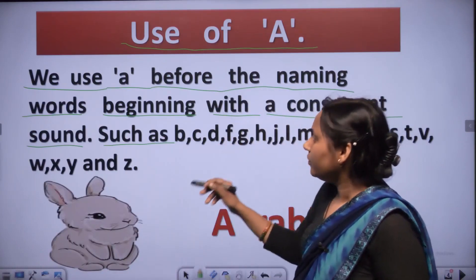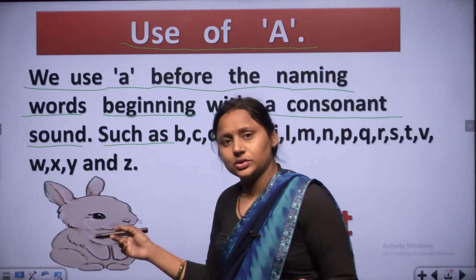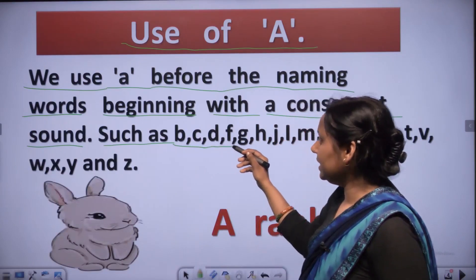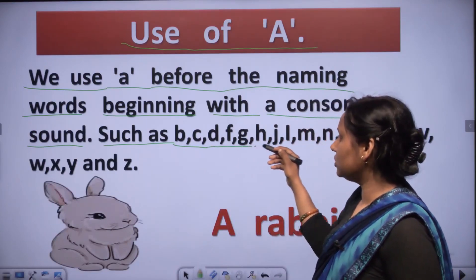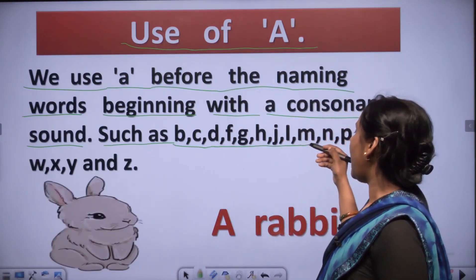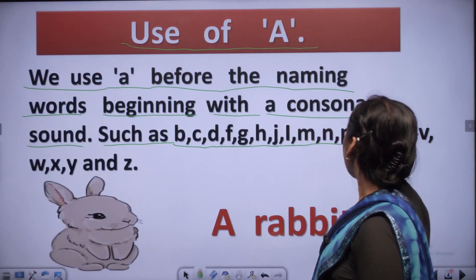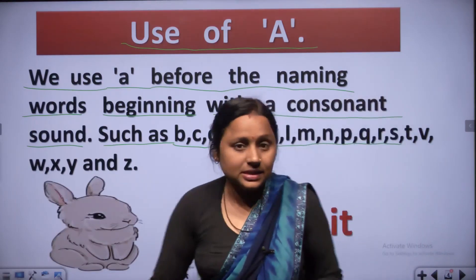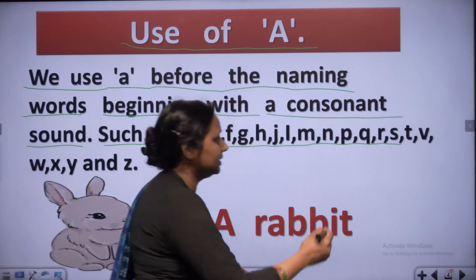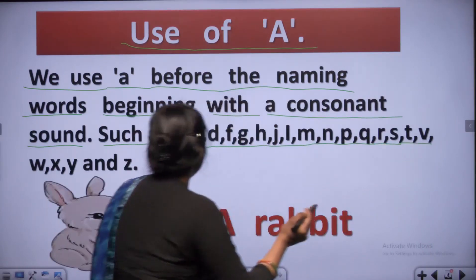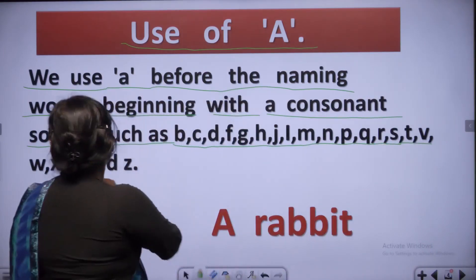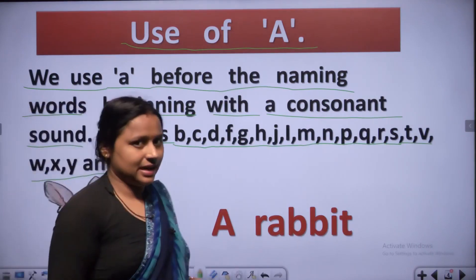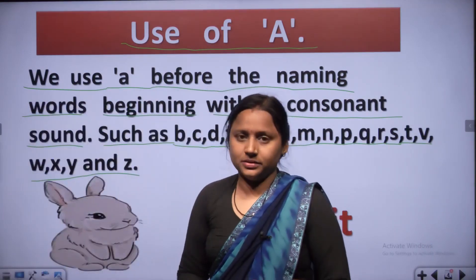All other letters are consonants, such as B, C, D, F, G, H, J, L, M, N, P, Q, R, S, T, V, W, X, Y, and Z. They are consonants - 21 letters in total.